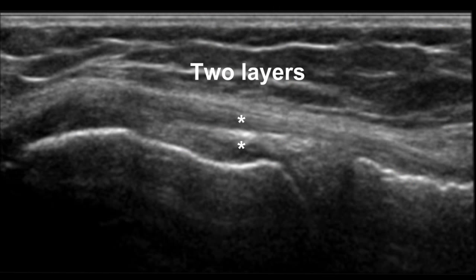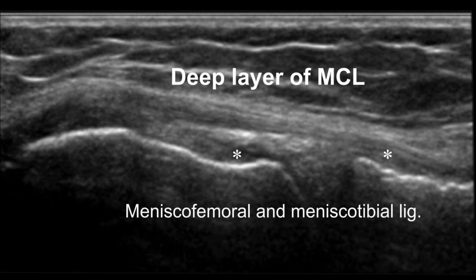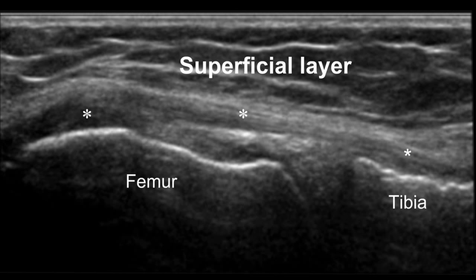The medial collateral ligament is a two-layer structure. The deep layer is composed of meniscofemoral and meniscotibial ligaments, tightly attached to the medial meniscus. The superficial layer is made up of broad and flat fibrous connective tissue, running from the medial femoral epicondyle to its tibial attachment.